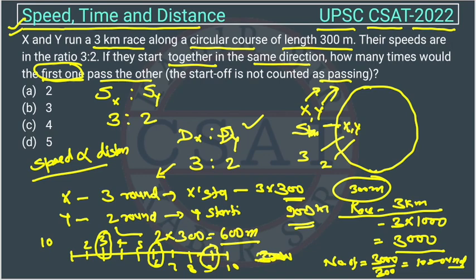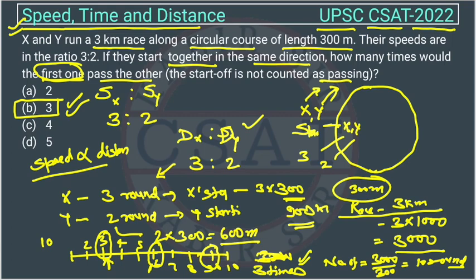They meet at the third round when X covers 3 rounds and Y covers 2 rounds; again at the sixth round when X covers 6; and similarly at the ninth round. So they meet 3 times — the answer is option B. We simply divide 10 by 3, which gives 3.